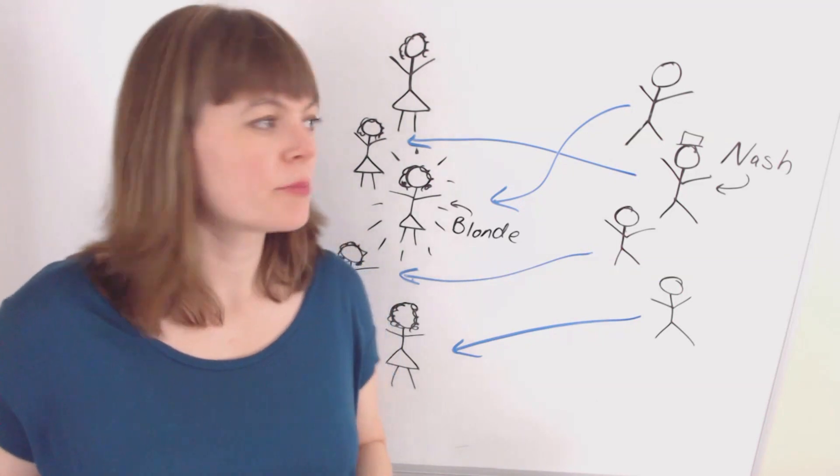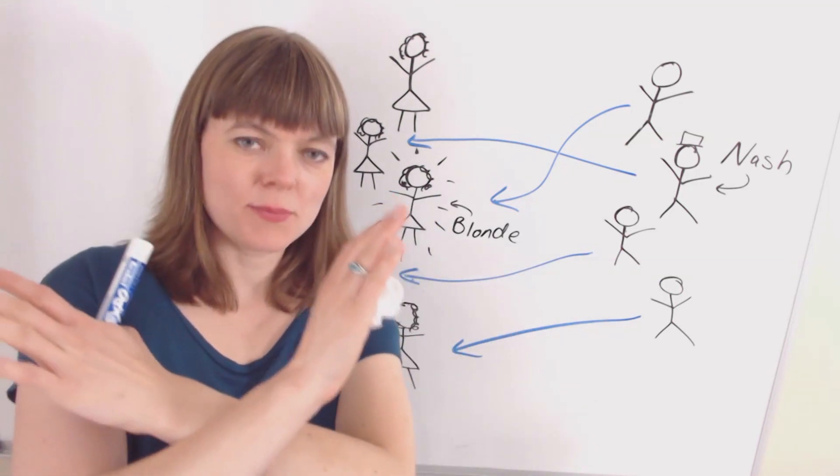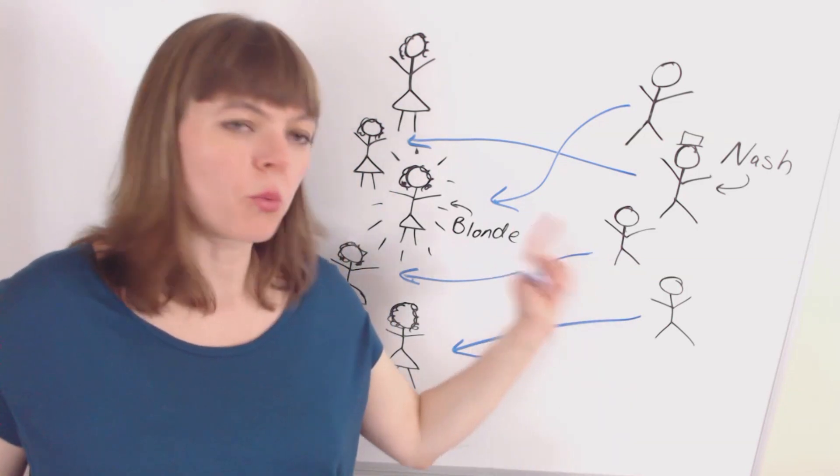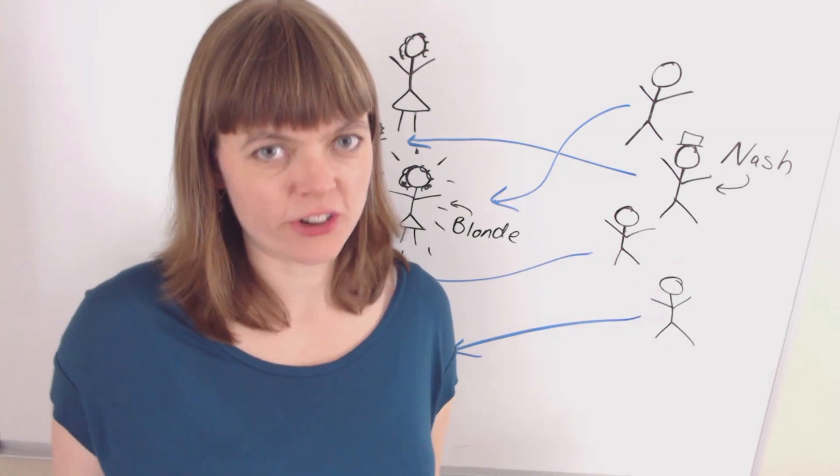But anytime the blonde is sad because she didn't get a date, that's not going to be a Nash equilibrium. There will be one of the guys left over who has regrets, and we know that violates the criteria.